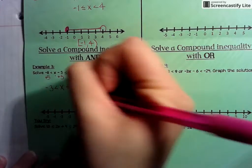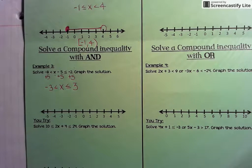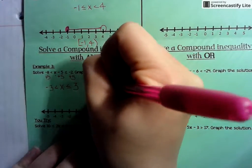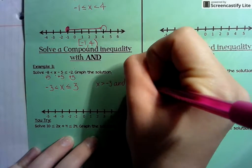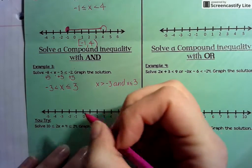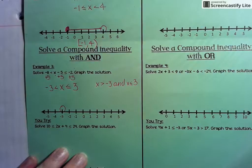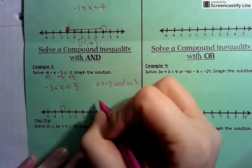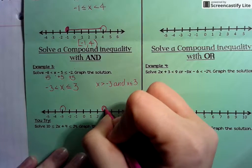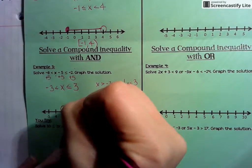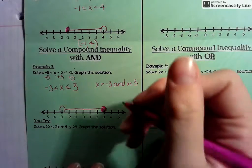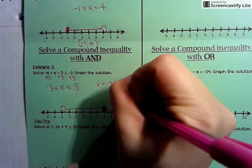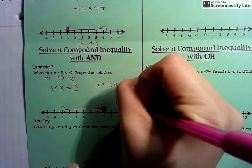We now have X is greater than negative 3 and X is less than or equal to 3. We want numbers greater than negative 3, so we use an open circle there, and numbers less than or equal to 3, so we use a closed circle there, with all numbers in between. The interval notation is parenthesis negative 3 comma 3 bracket.